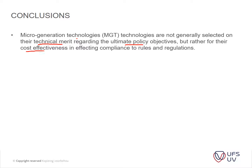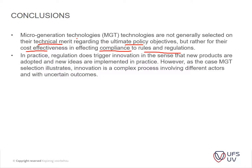Technologies are selected rather for cost effectiveness in effecting compliance. This is the key role of rules and regulations — the guys specify them because it's a regulation, a tick box they need to tick. They thought of alternative energy-saving materials and chose the cheapest one to adopt, rather than looking at the main goal of energy-efficient supply of energy. In practice, regulations do trigger innovation in the sense that new products are adopted and new ideas are implemented. However, the case of micro-generation technology illustrates that innovation is a complex process involving different actors with certain outcomes.